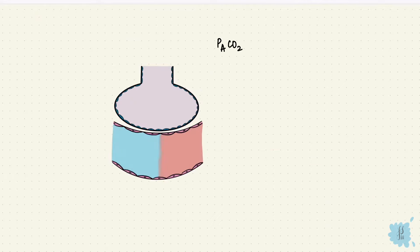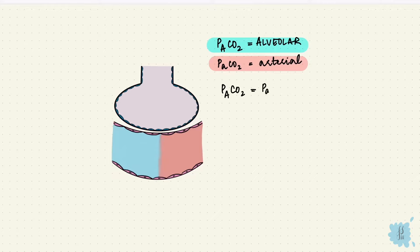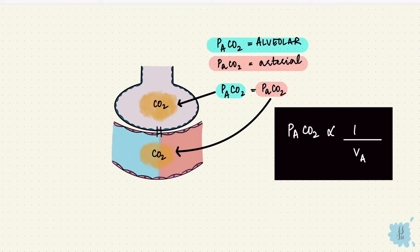The capital A refers to alveolar carbon dioxide, and the small a is for arterial. Both alveolar and arterial carbon dioxide levels are equal because carbon dioxide equilibrates between the alveolar air and the pulmonary capillary blood, and therefore systemic arterial blood as well. So arterial carbon dioxide can substitute for alveolar carbon dioxide. When alveolar ventilation increases, arterial carbon dioxide falls, because more carbon dioxide is removed from the capillary blood.